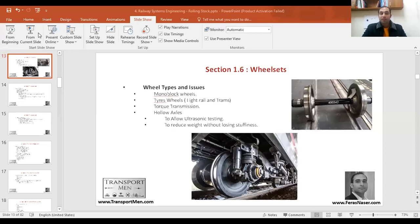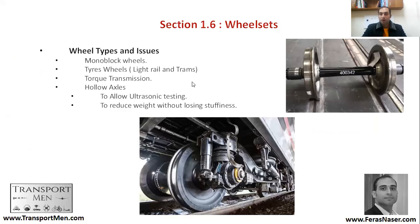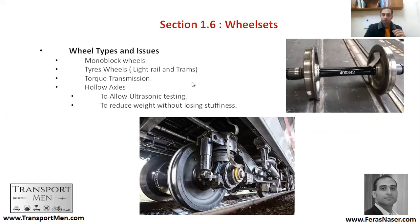Now we'll be talking about wheel sets. Wheel sets can have different types: the monoblock is the famous type where the whole wheel is cast as one block. Sometimes some systems use a tire block, and this is for light rail or guided buses. The function of the wheel sets is to do torque transmission.